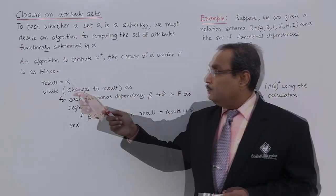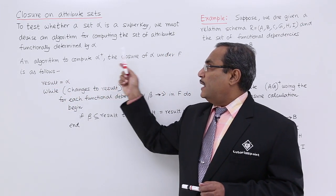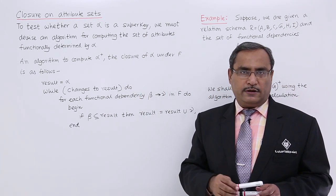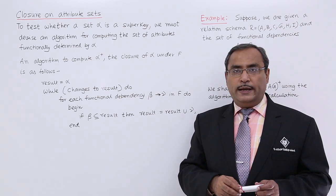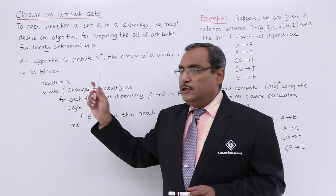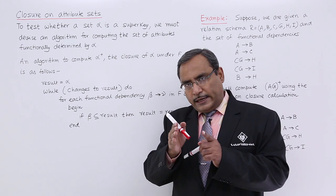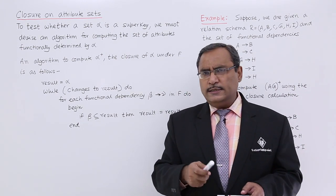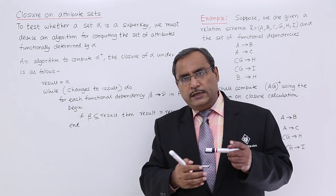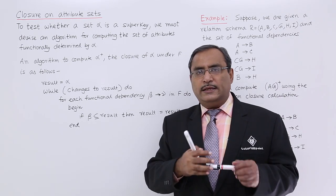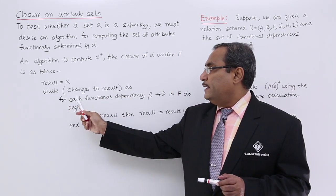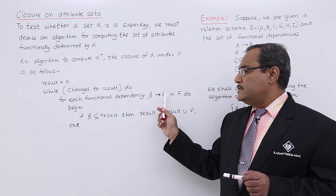Now, how to do this? An algorithm to compute alpha plus — the closure of alpha under F — is as follows. F is nothing but the set of functional dependencies given, and we are going to get the closure of alpha, denoted by alpha plus. Initially, result is equal to alpha, so whatever attributes are in alpha will be kept in the result. While changes to result do, we continue with the while block.